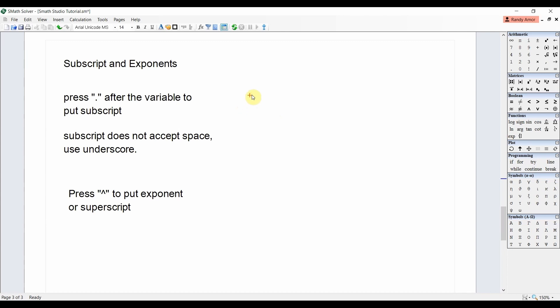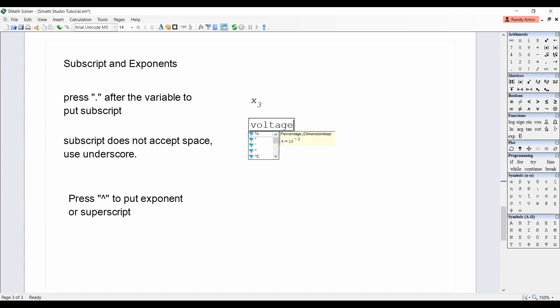Entering subscript can be done by pressing the variable followed by period and then the desired subscript. For example, type x point 3 for x sub 3. Please note that subscript does not accept space. Use underscore instead. For example, voltage point no underscore load and i dot short underscore circuit.